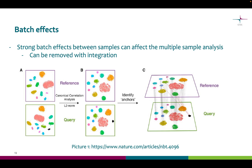Merge simply combines data frames or objects into one. The other method, integration, is useful when you have strong batch effects present in the data. When finding corresponding spots in the samples, technical and biological variability can cause batch effects, which can affect the results. These batch effects can be removed with integration.